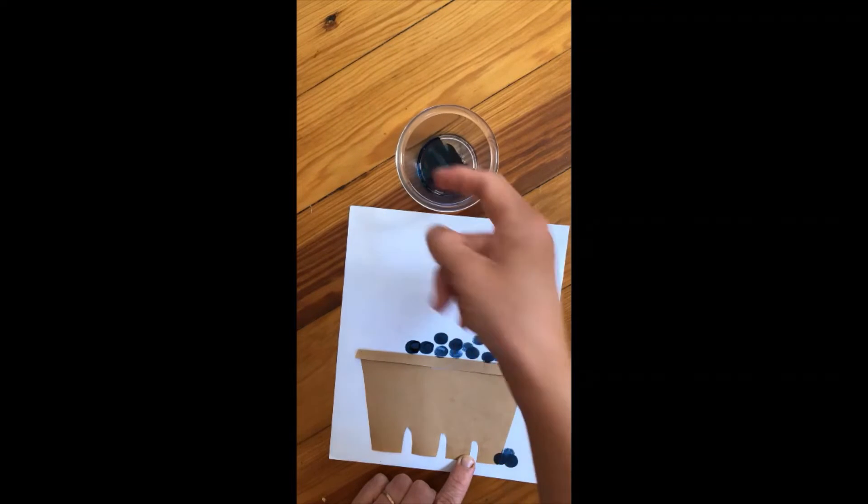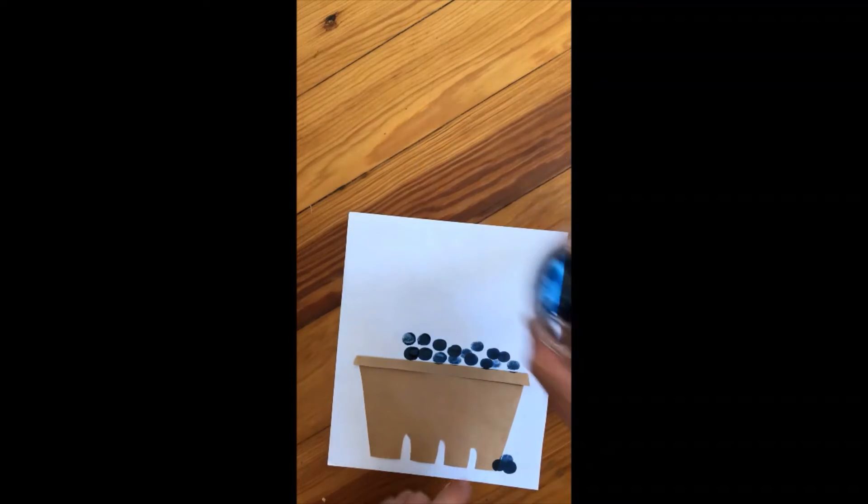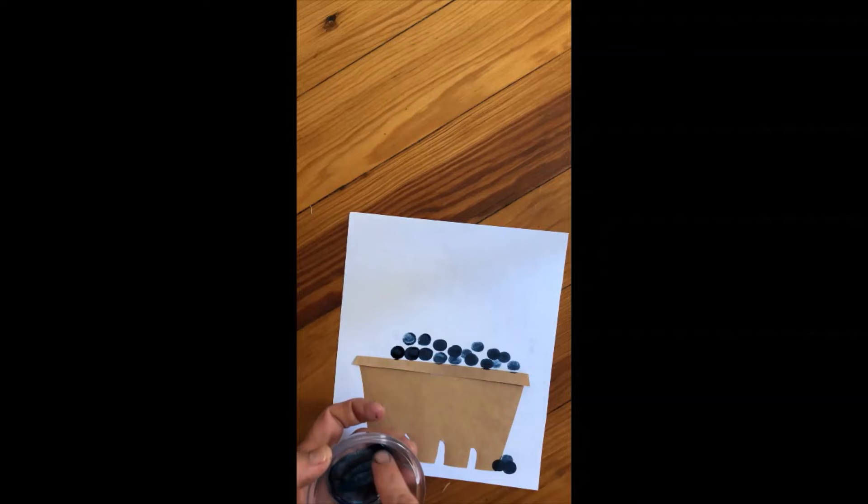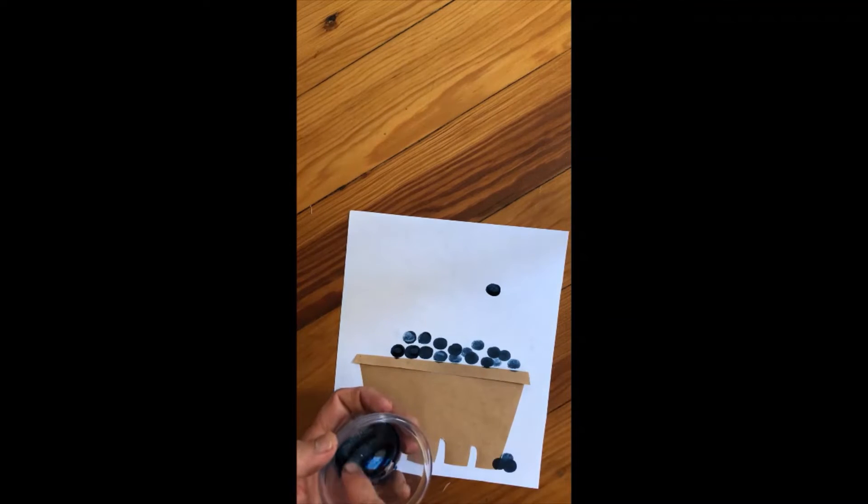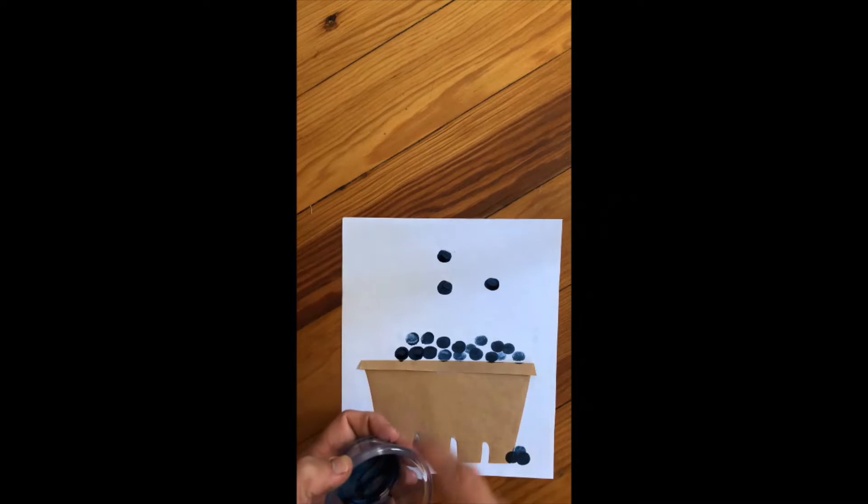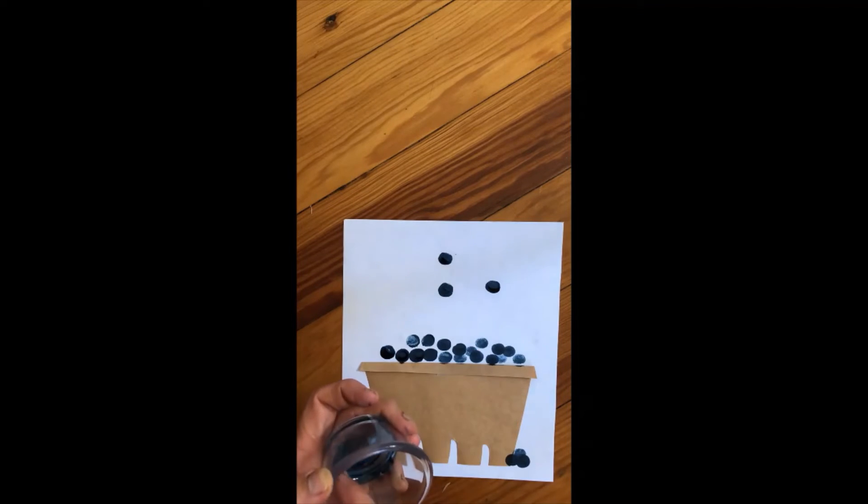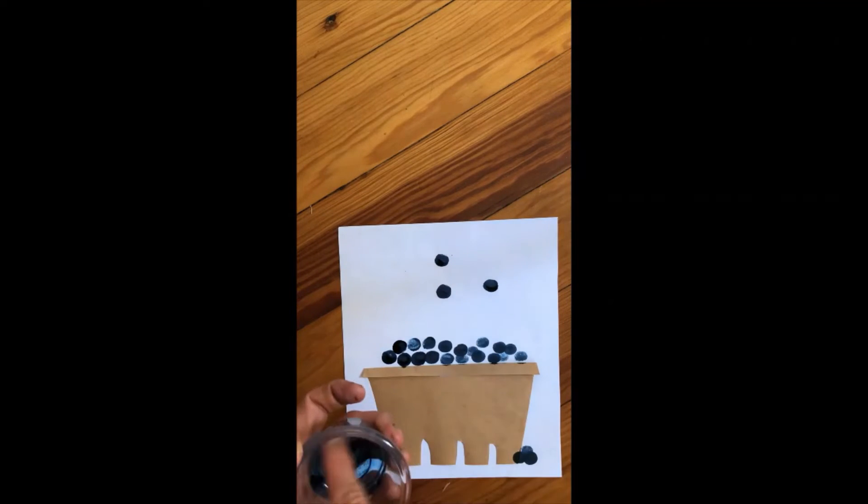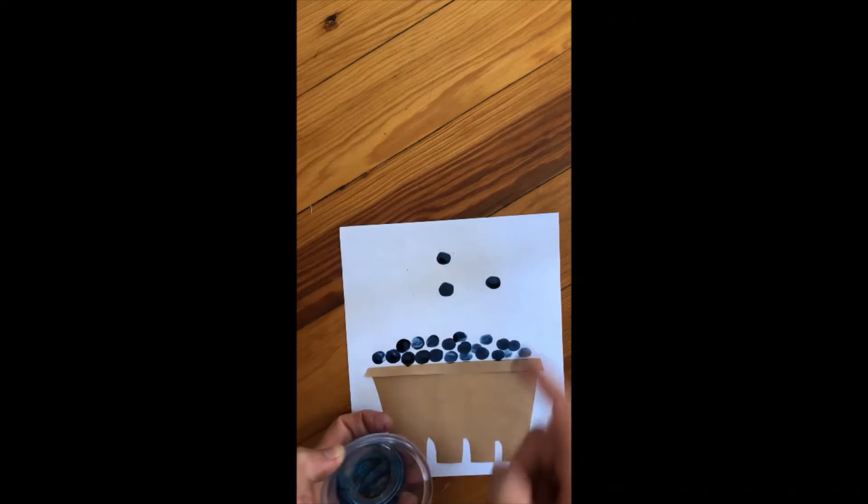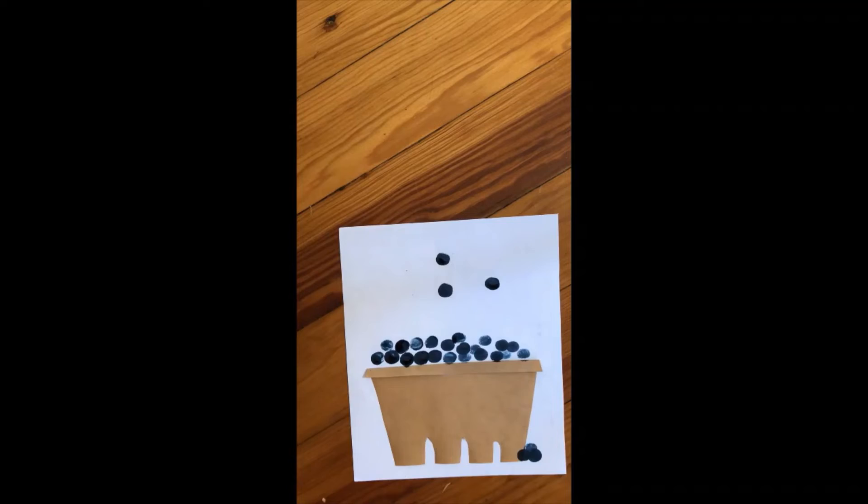Los arándanos que quieran. You guys are going to probably use better paint than I have. I don't have the perfect paint for this. But you can put your blueberries in your basket. You can put them up here like they're falling in the basket. Así es. Los arándanos en la canasta. There we have it. Blueberries in our basket. Ahí está.